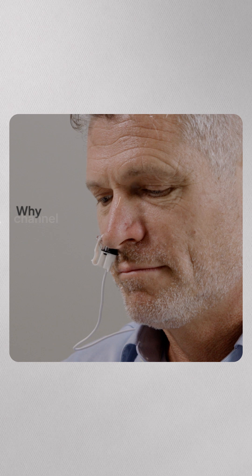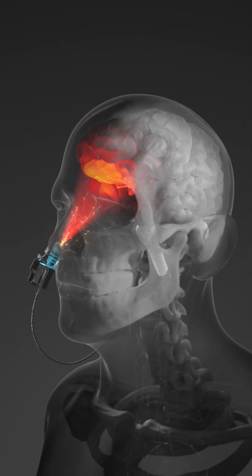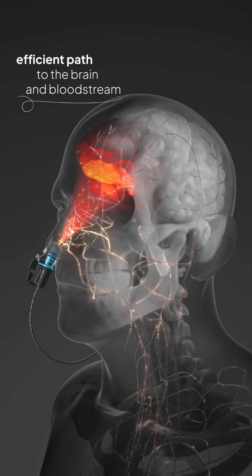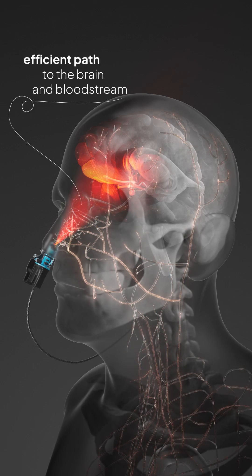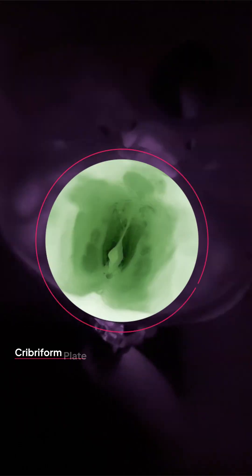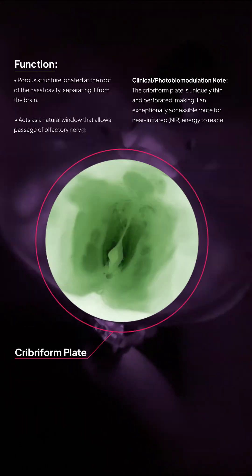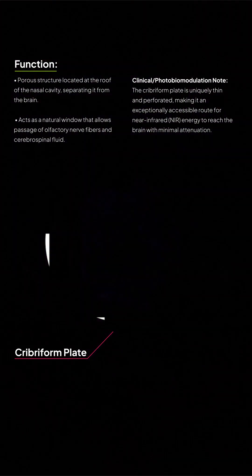Why the nose? The nasal cavity provides a direct, efficient path to the brain and bloodstream, bypassing transcranial barriers like hair and the skull. Just above it lies the cribriform plate, the thinnest part of the skull, averaging only 0.1 millimeters, almost paper thin.